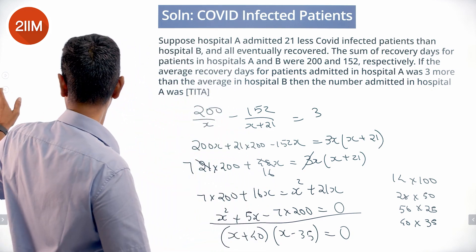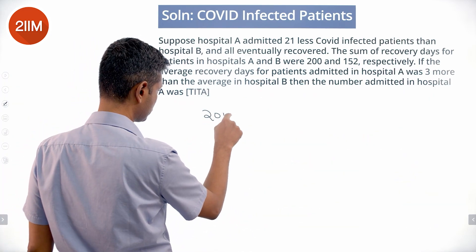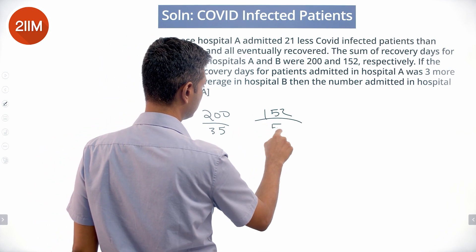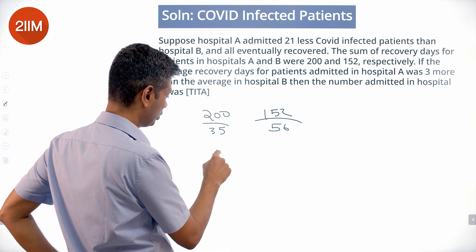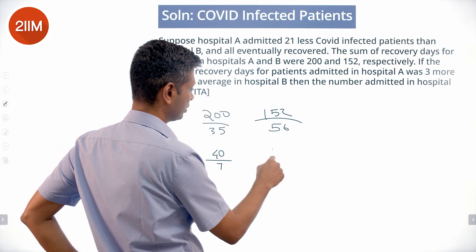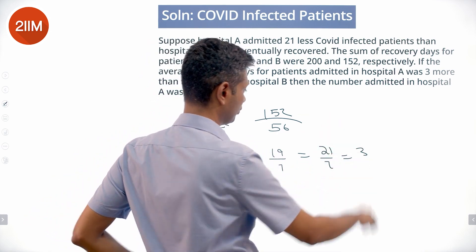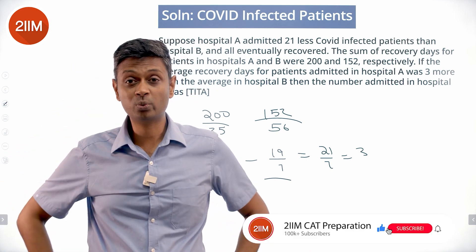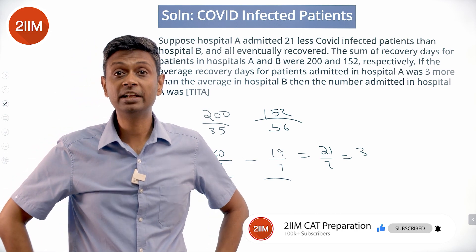With x equals 35, the average days for hospital A is 200/35 equals 40/7, and for hospital B is 152/56 equals 19/7. The difference is 21/7, which equals 3. Just wonderful — neither average is an integer, but their difference is. That's why all my attempts to find integer factors wasted precious minutes.